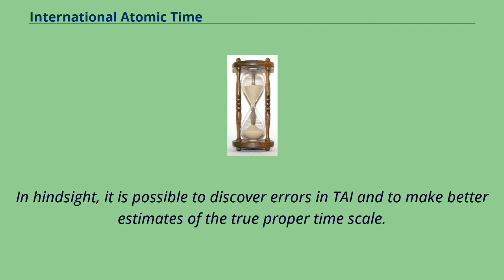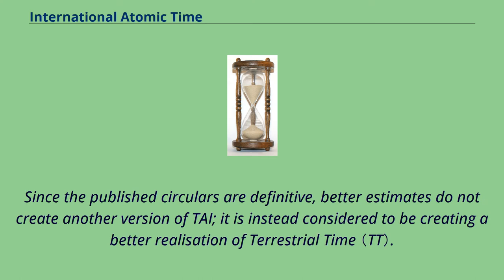In hindsight, it is possible to discover errors in TAI and to make better estimates of the true proper timescale. Since the published circulars are definitive, better estimates do not create another version of TAI. It is instead considered to be creating a better realization of terrestrial time.